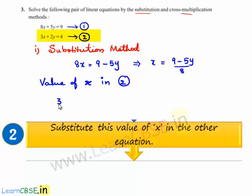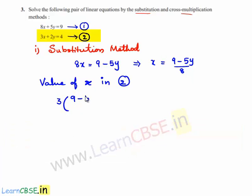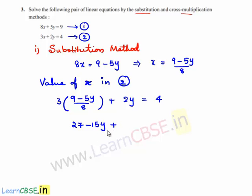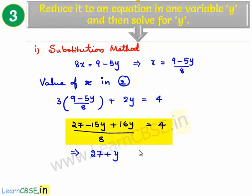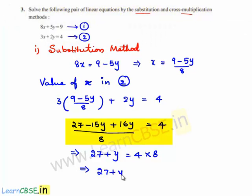Substituting, we get 3 times of (9 minus 5y) divided by 8, plus 2y, is equal to 4. This gives 3 times 9 is 27, and 3 times minus 5y is minus 15y. Taking LCM as 8, we get 8 times 2y which is 16y. So we get 27 minus 15y plus 16y, and 8 goes to the right-hand side, giving 27 plus y is equal to 32.